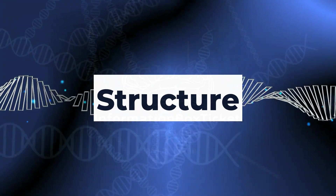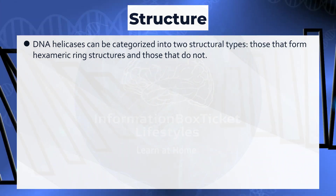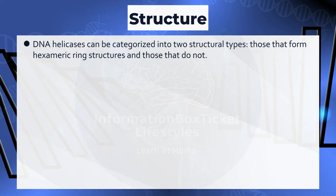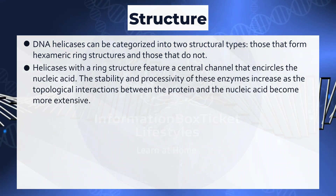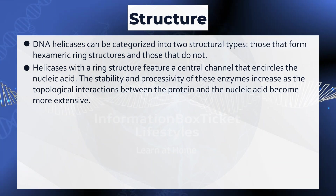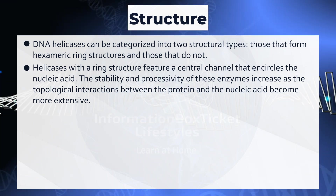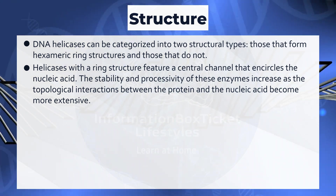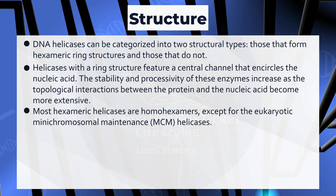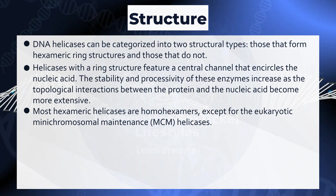Structure of DNA Helicases: DNA helicases can be categorized into two structural types — those that form hexameric ring structures and those that do not. Helicases with a ring structure feature a central channel that encircles the nucleic acid. The stability and processivity of these enzymes increase as the topological interactions between the protein and the nucleic acid become more extensive. Most hexameric helicases are homohexamers, except for the eukaryotic mini-chromosomal maintenance (MCM) helicases.